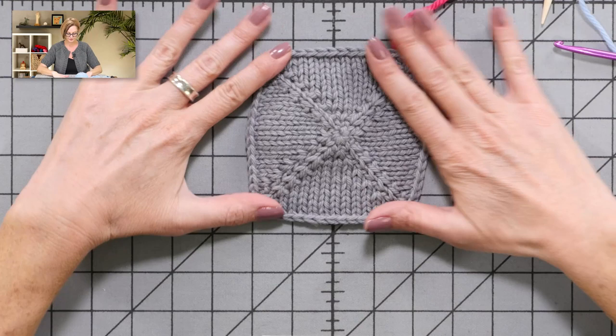The pinhole cast on is a way of using a crochet hook to make a cast on that you can actually tighten so that there isn't a hole or any kind of gap in the very center of the work. That's what this technique does. Let's go ahead and take a close-up.